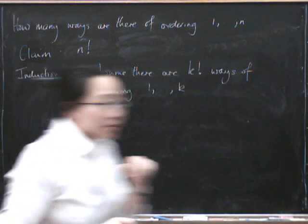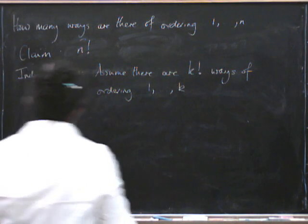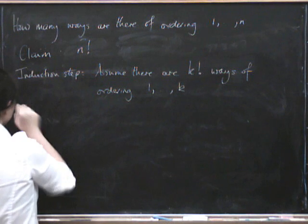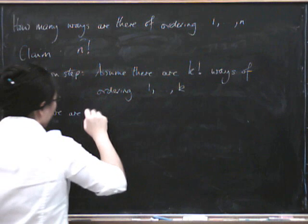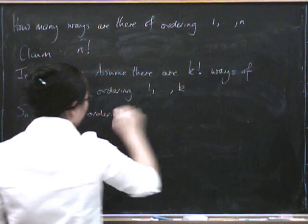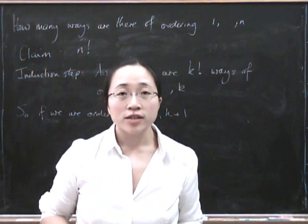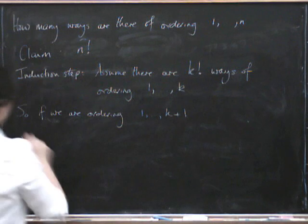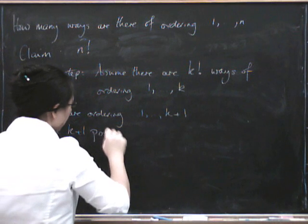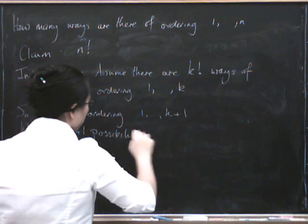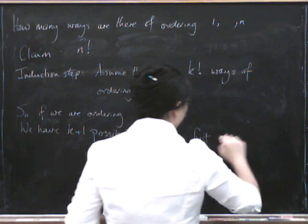Now we want to see how many ways there are of ordering the numbers 1 up to k plus 1. If we are ordering numbers 1 up to k plus 1, we know that we've got k plus 1 different choices for the first element. So we have k plus 1 possibilities for the first number.